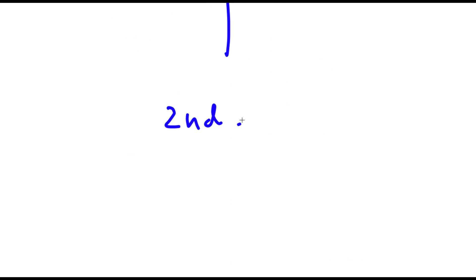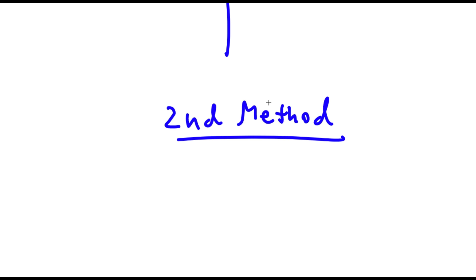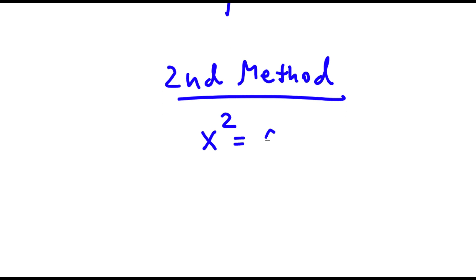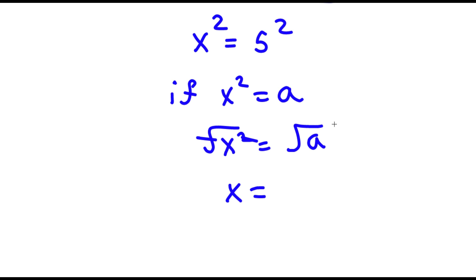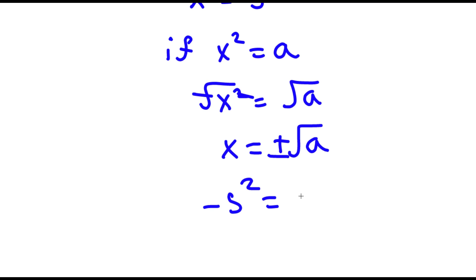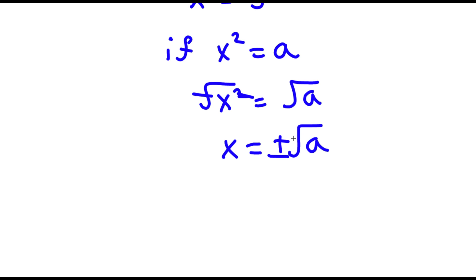Now for my second method, solving this problem — start with x to the power of 2 is equal to 5 to the power of 2. Now if I have something in the form x squared is equal to a, I would first take the square root on both sides, and then I would be left with x is equal to positive or negative the square root of a, because if you square a negative number — let's say negative 5 — this is still going to end up being positive 25. That's why the square root of a number has both a positive and negative solution.